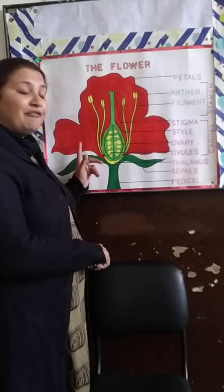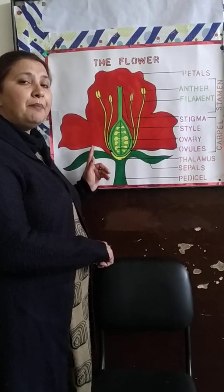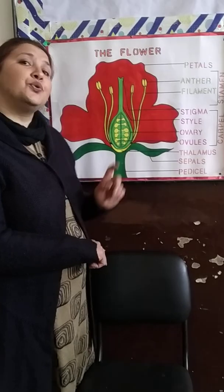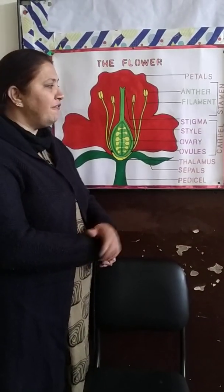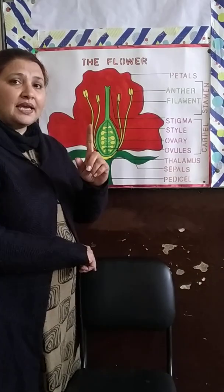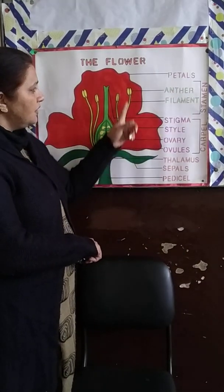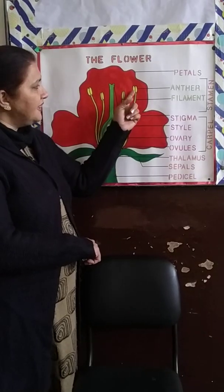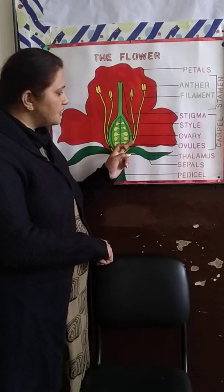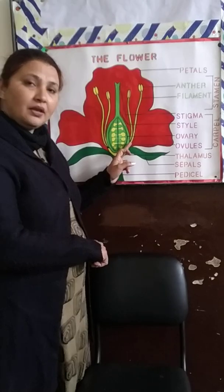Calyx and corolla are performing these functions, but these are the non-essential whorls of a flower. Now, I am moving to the third whorl of a flower — that is called the androecium, and the androecium is made up of stamens. One stamen has two basic parts: the anther and the filament. The anther and filament together form a stamen, and all the stamens collectively are called the androecium.